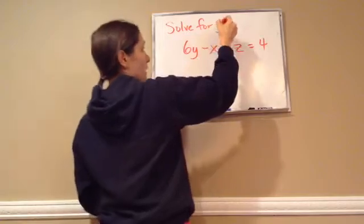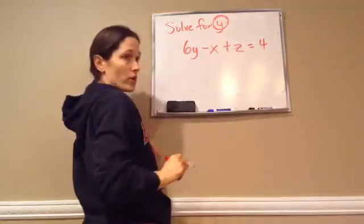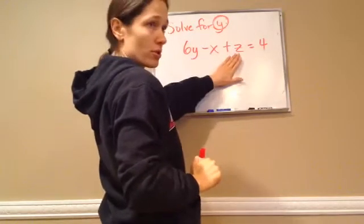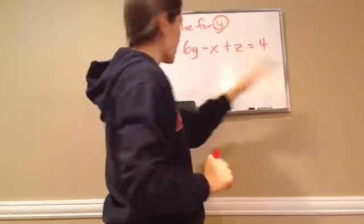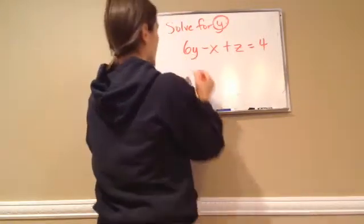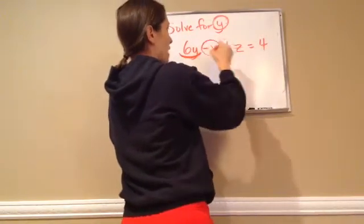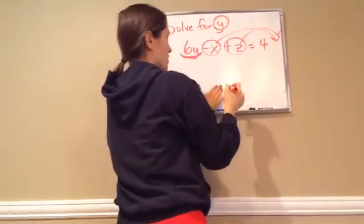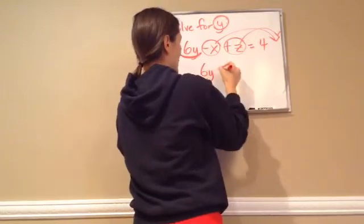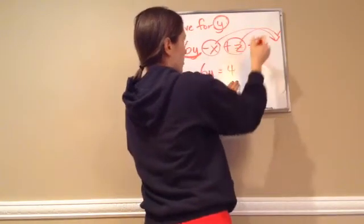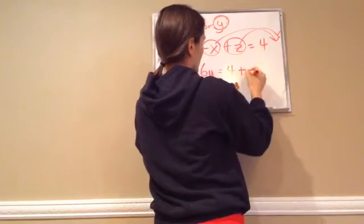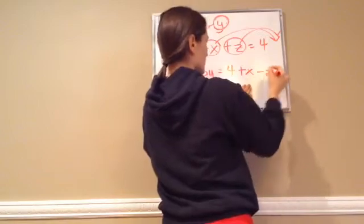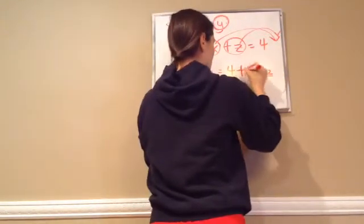Alright, now here is the main part you need to focus on, solve for y. So you're going to pretend like these are numbers. You're just going to move them to the other side, just like we normally do, to try to get this 6y by itself. So minus x moves across, and plus z moves across. So I'm going to put 6y equals 4, and then when I move these across, minus x becomes plus x, and plus z becomes minus z.